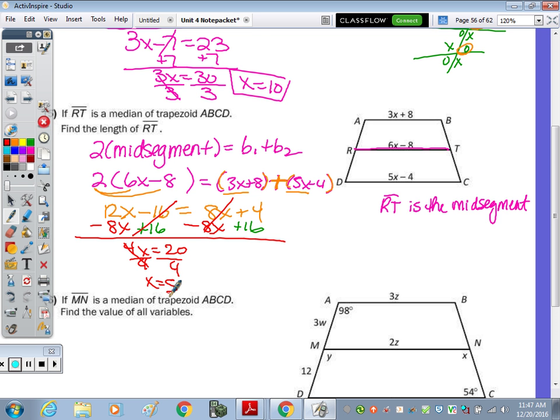This was just like the one multiple choice question on the warm-up, where I said to find the measure of something and not just X. So we have to go back and find the length of RT. RT would be 6 times 5, which is 30, and then 30 minus 8 is 22.